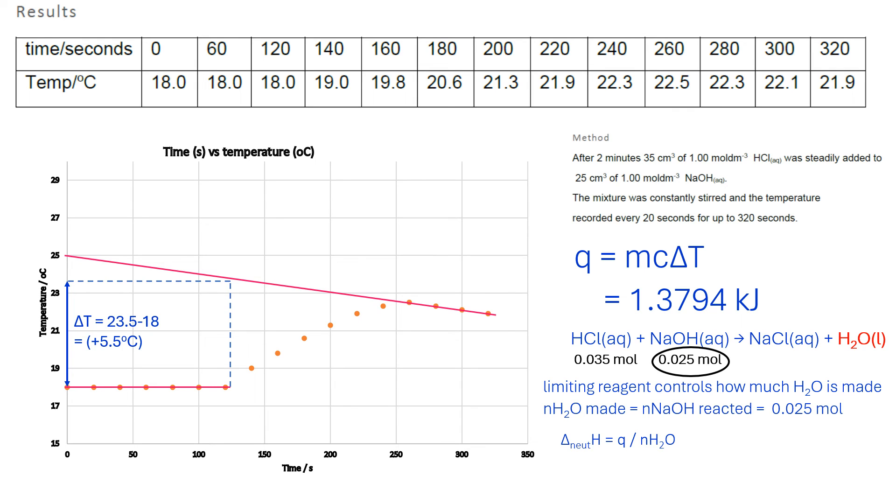So the enthalpy of neutralization is Q, or minus Q because it's a rise in temperature from an exothermic reaction, in kilojoules divided by the number of moles of H₂O. That's -1.3794 divided by 0.025, which equals -55.176 kJ/mol.